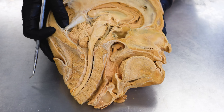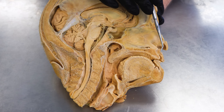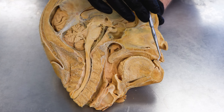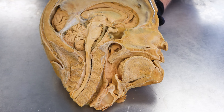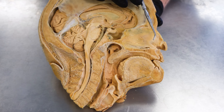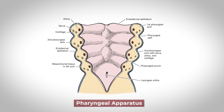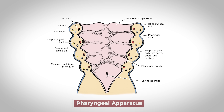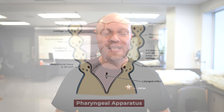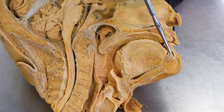So we have the primary palate, the philtrum, and that middle portion of the upper lip — all the way up to the forehead — coming from that frontonasal prominence. Then you also have what's called the pharyngeal apparatus. This goes back to around week four of embryonic development. The pharyngeal apparatus wraps around to create the tongue and the mandible.